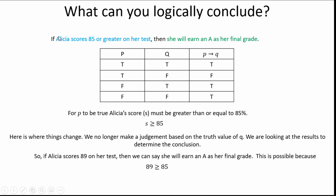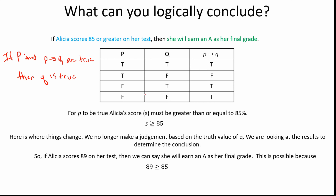So here's our thought process set up algebraically. Felicia scores 85 or greater on her test is in blue because that's what we use for our hypothesis color. Then she will earn an A as her final grade — that green is our conclusion. And what we're actually doing this time is a little bit different than what we did the last time. We need to see what the law of detachment tells us: P and P implies Q are true. So here for P to be true, her score must be greater than 85.